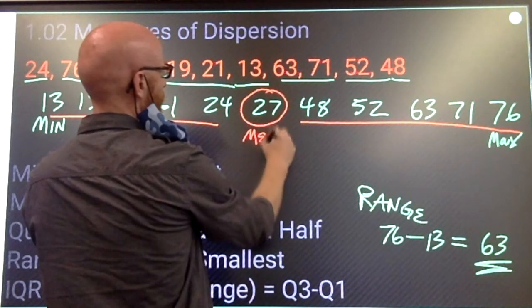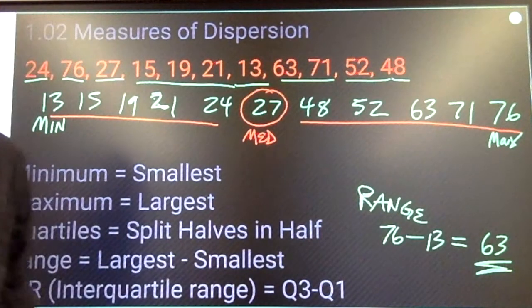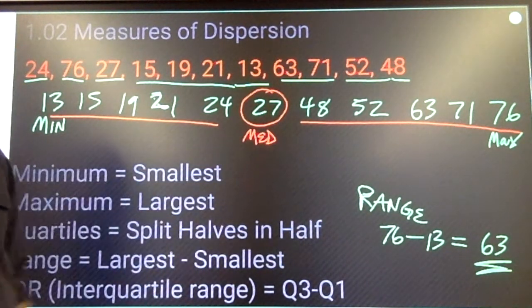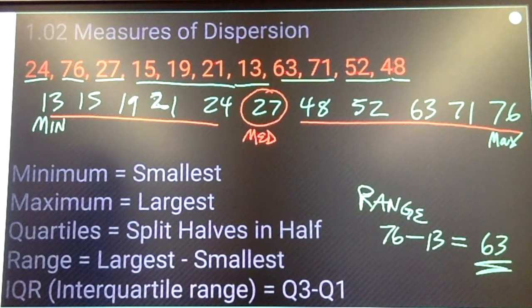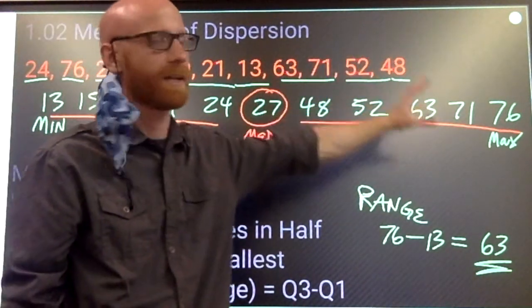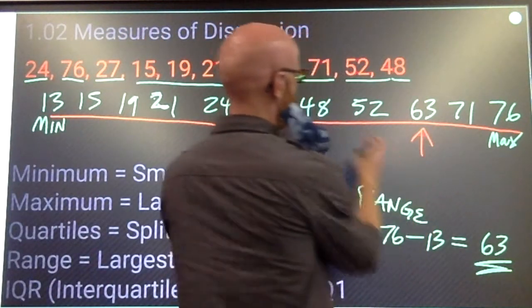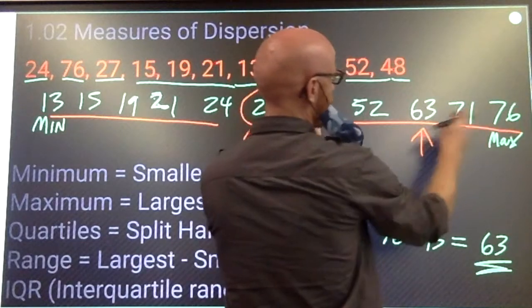this is my median. That is a measure of center, not a measure of dispersion, but I use it then to find my quartiles. And quartiles will be the center of the upper set, center of everything above the median. So, that's right here. All right, one, two, one, two.